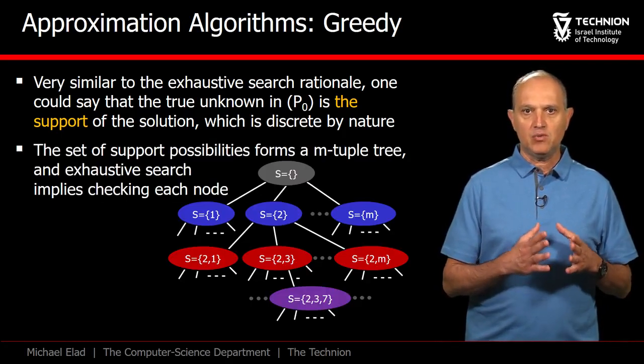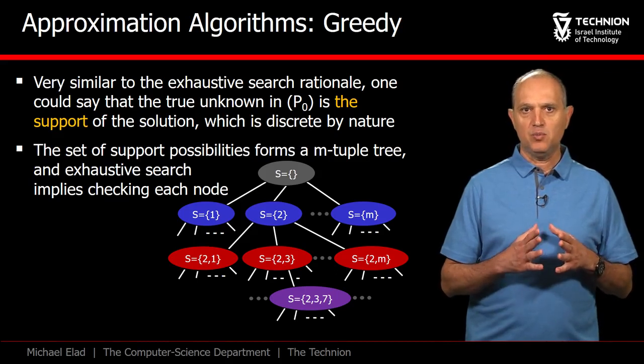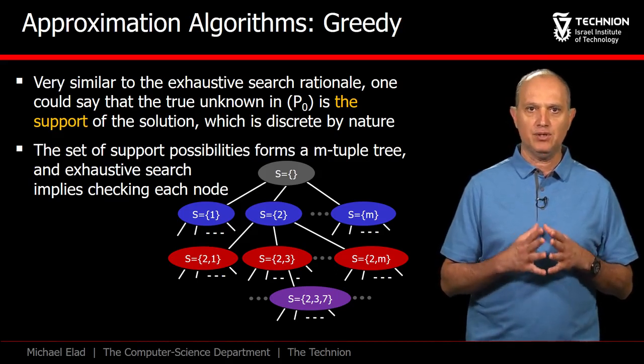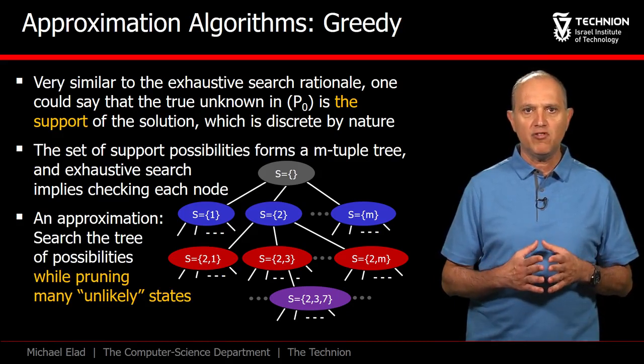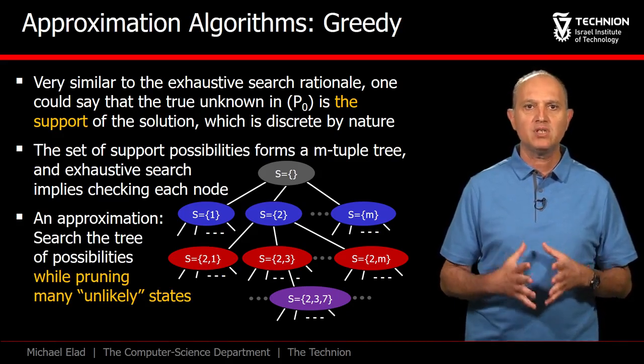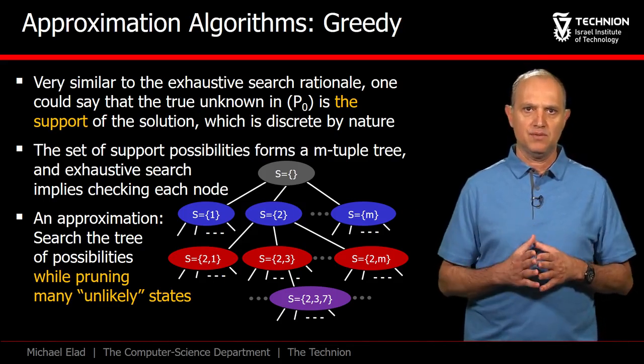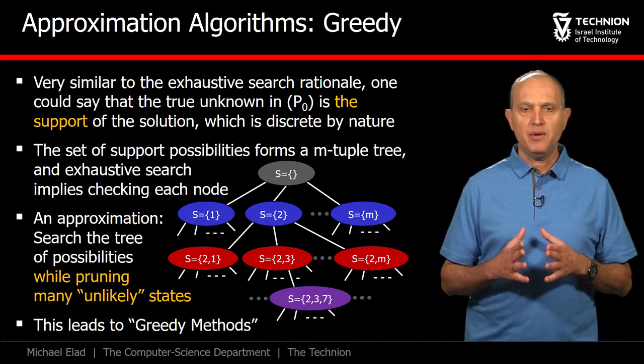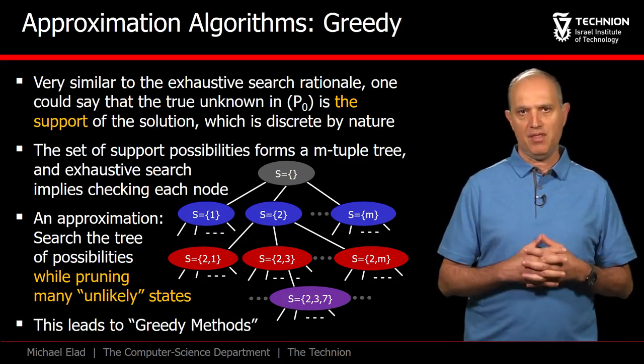Indeed, the exhaustive method we have described sweeps through the entire tree of possibilities of this support, checking each and every option. As we go to approximation methods, we should prune this tree of possibilities and skip many possible tests, hopefully those who are less likely to hit the true solution. This leads us to various strategies that belong to the wide family of greedy methods.